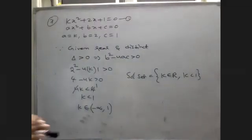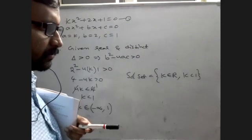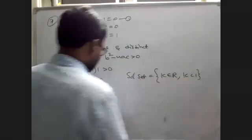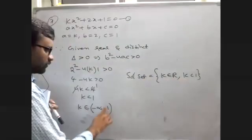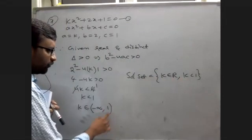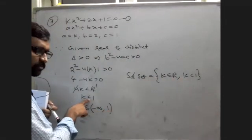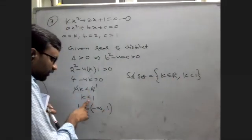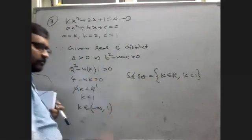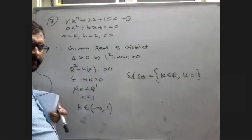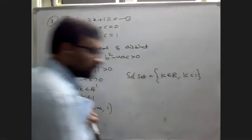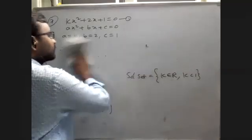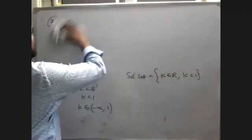Near 1, we use only open bracket. Why? Because there is no equal-to symbol. If you have an equal symbol, you write a closed bracket. If you have no equal symbol, open bracket only.